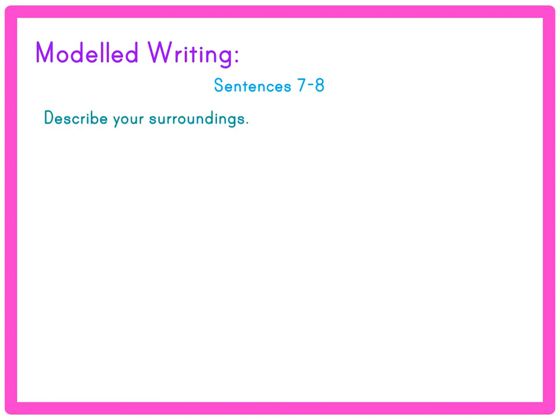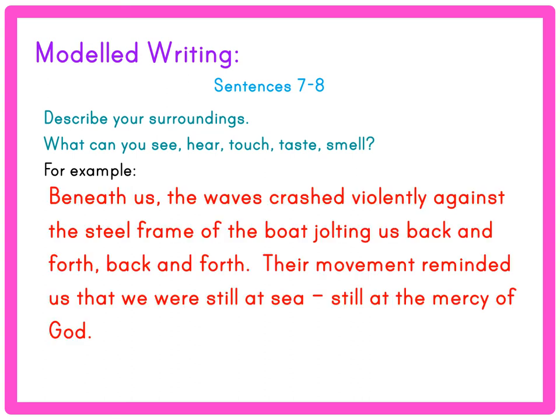Sentences 7 to 8: Describe your surroundings. Think about what you can see, hear, touch, taste and smell. For example: 'Beneath us the waves crashed violently against the still frame of the boat, jolting us back and forth, back and forth. Their movement reminded us that we were still at sea, still at the mercy of God.' Write two sentences describing your surroundings and how that is affecting your mood and what you are thinking about.